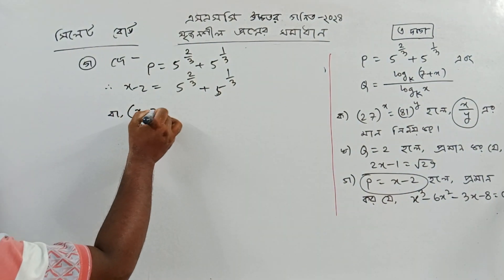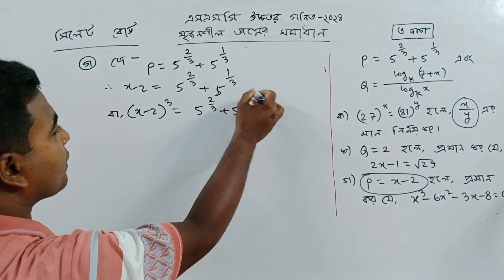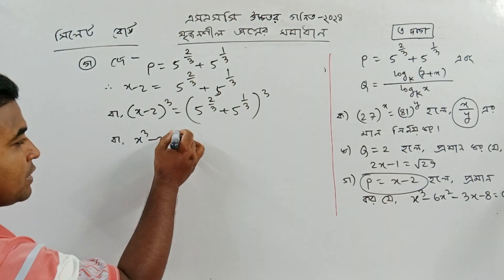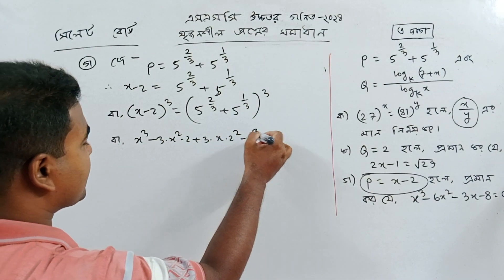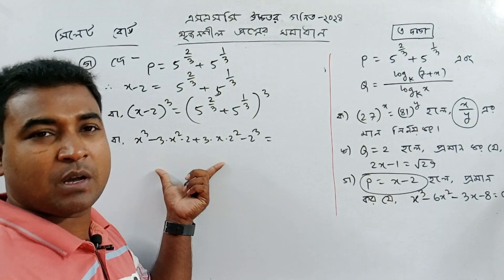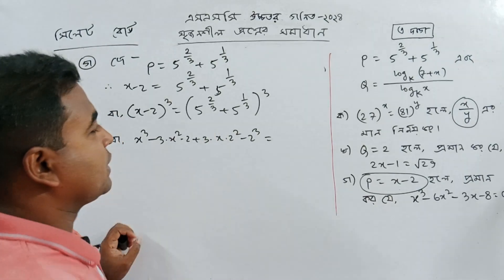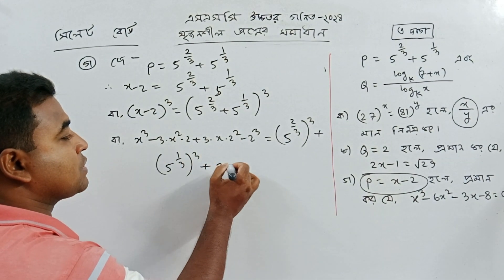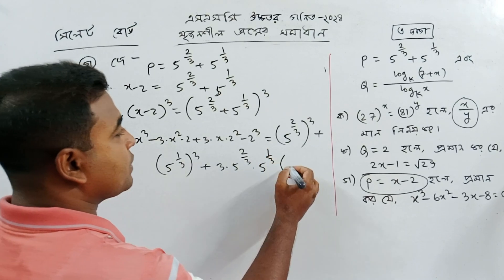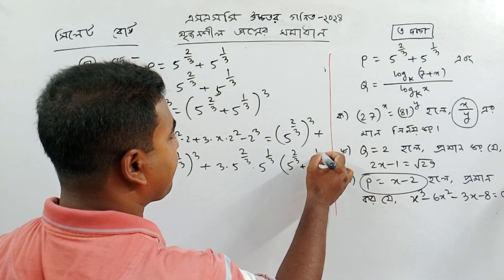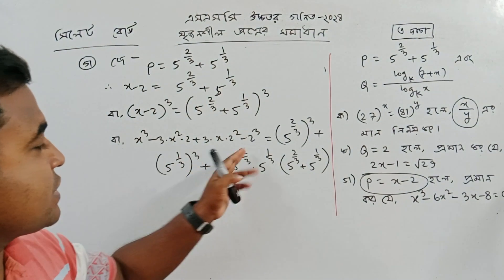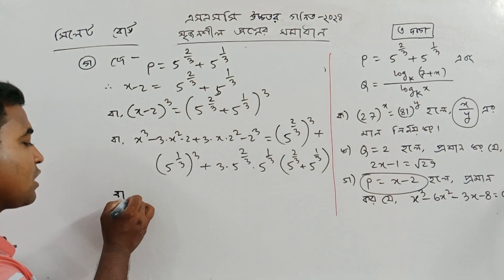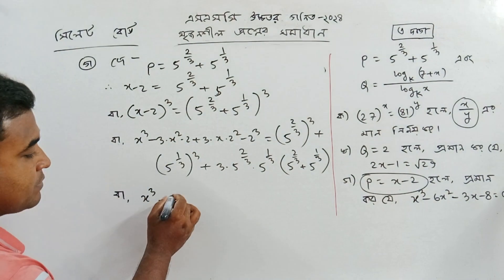We use the identity a minus b whole cube equals a cube minus 3a squared b plus 3ab squared minus b cube. And for a plus b whole cube: a plus b cube plus 3ab into a plus b. Applying this identity, starting with the substitution x minus 2 and expanding, we get 6x squared as part of the expansion.